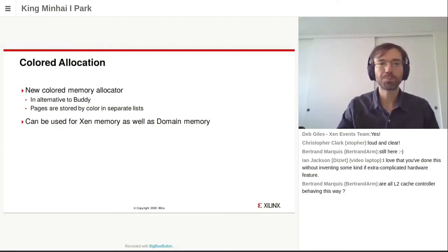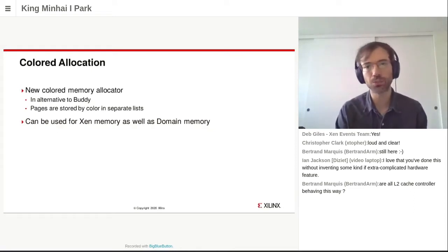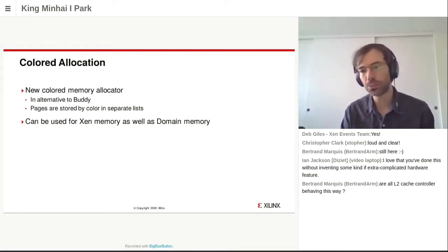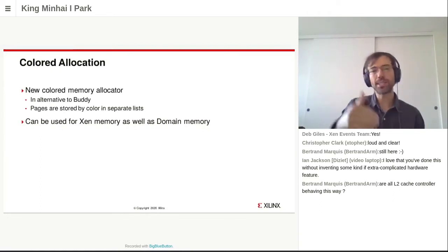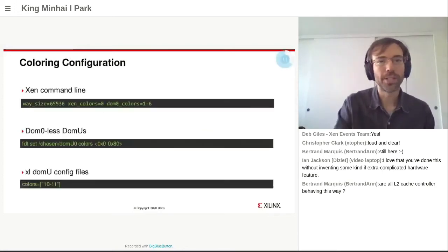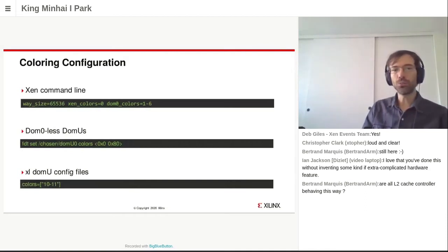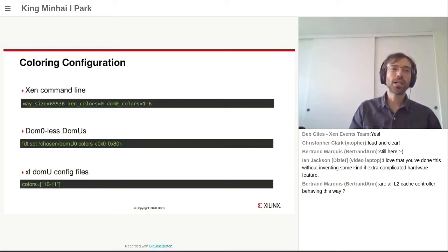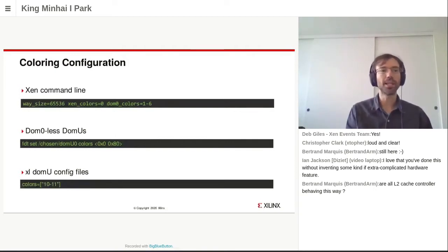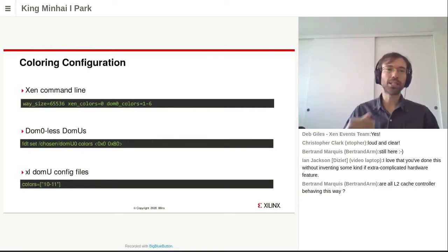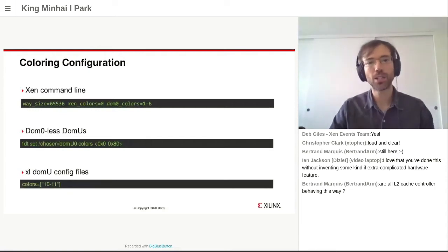Colors are numbered zero to 15. The memory allocator can be used both for Xen memory and for domain memory. One of the most difficult things was to also relocate Xen using colored memory — Xen relocates its own text into memory of a given color. For configuration, there are command line options: way_size to pass the way size manually (optional since it can be auto-detected), xen_colors to specify colors for Xen, and dom0_colors to specify colors for Dom0.